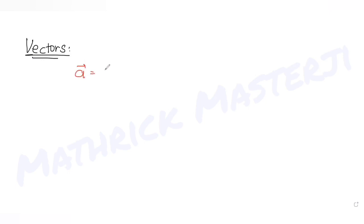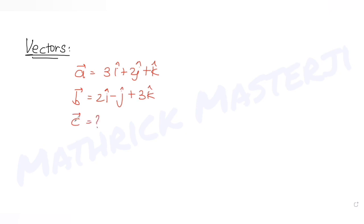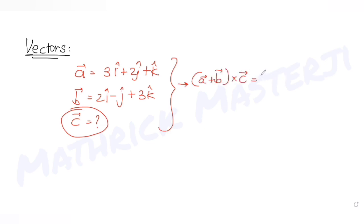Today's question is from the topic of vectors. We are given three vectors a, b, and c, where a = 3i + 2j + k, b = 2i − j + 3k, and c is an unknown vector. The first condition given is that (a + b) × c = 2(a × b) + 24j − 6k.